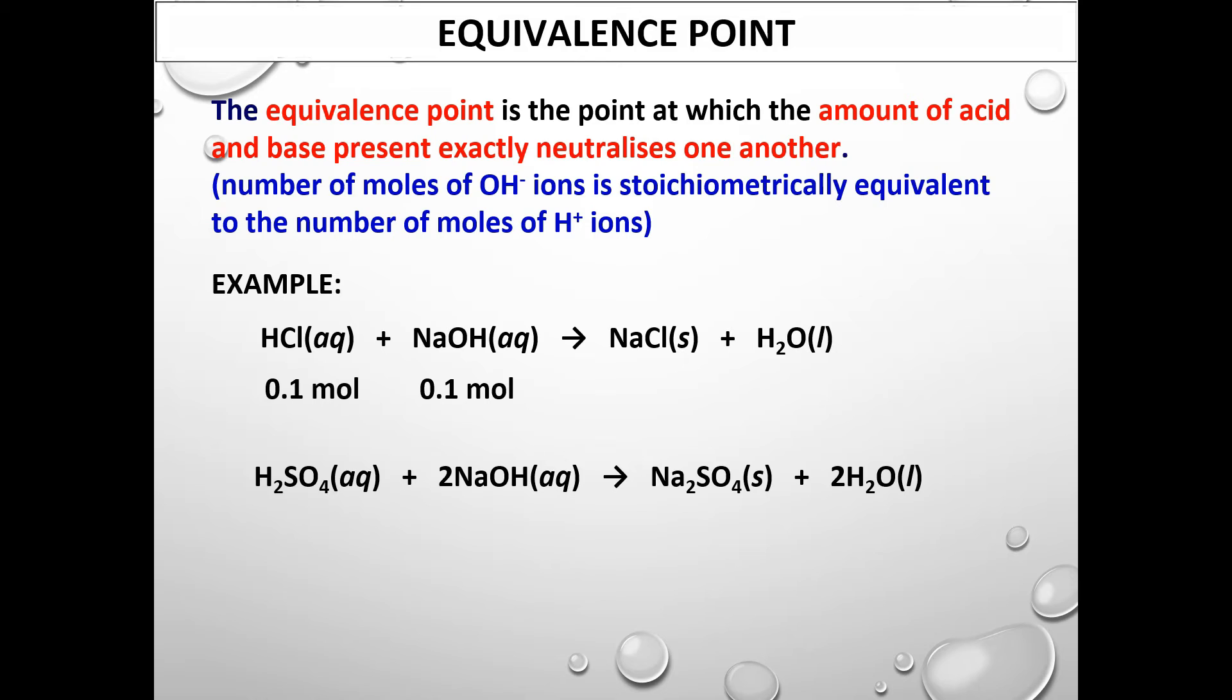Similarly, for the neutralization reaction between sulfuric acid and sodium hydroxide, the balanced equation shows that one mole of sulfuric acid requires two moles of sodium hydroxide for complete neutralization. Therefore, 0.1 mole of sulfuric acid would require 0.2 mole of sodium hydroxide for complete neutralization.